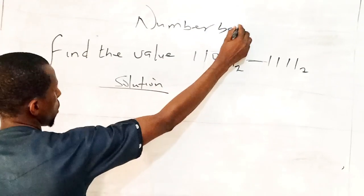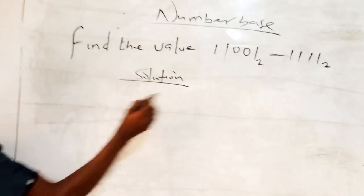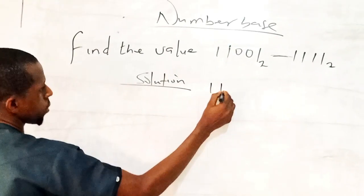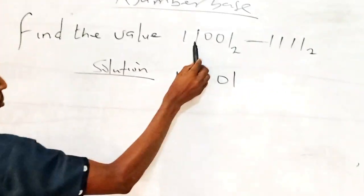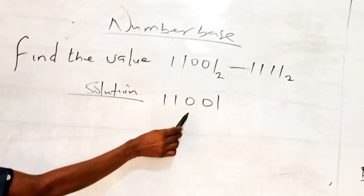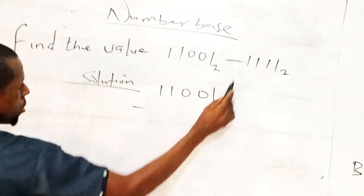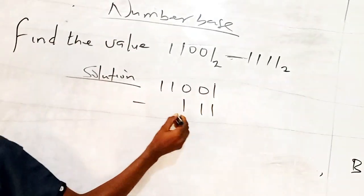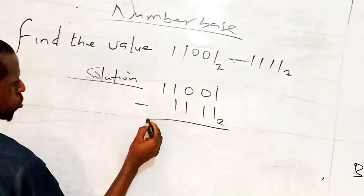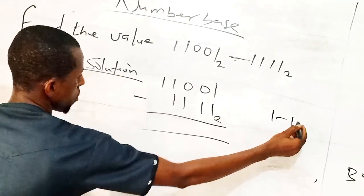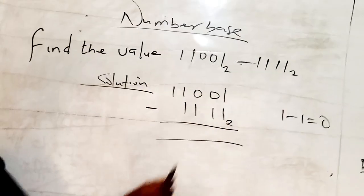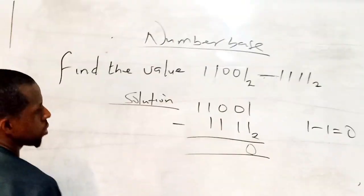Number base is 10. So we have 1101. Why are you writing this one first? Because we are subtracting this from this. So you have to write it first. Minus this: we have 111 base 2. So normally 1 minus 1 is 0. We know that. So 1 minus 1 is 0.